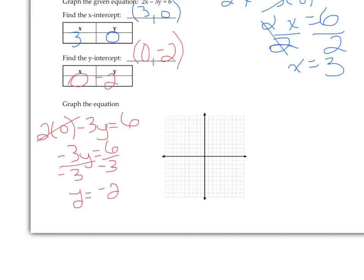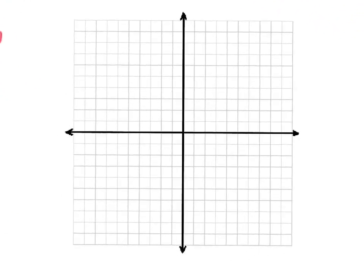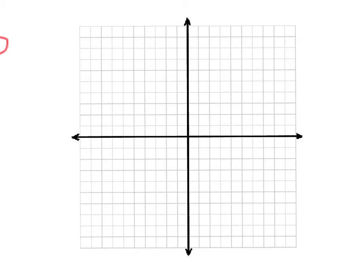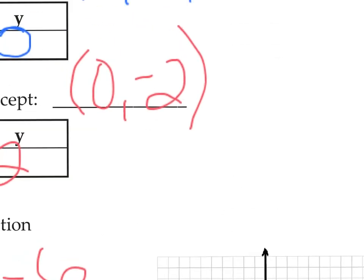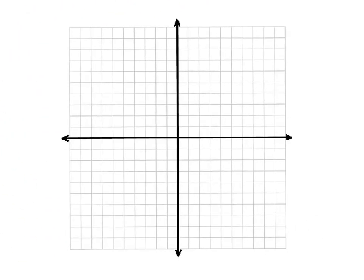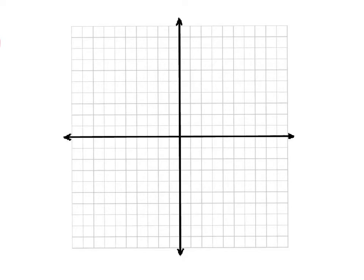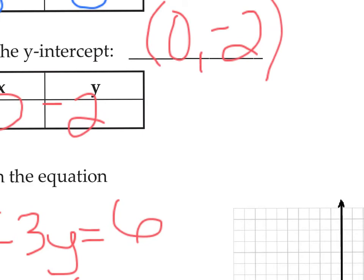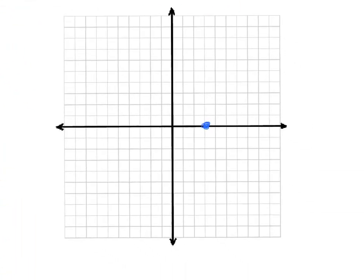We'll enlarge the graph a bit. The x-intercept was (3, 0), so we put a point at 3, 0 — right here. The y-intercept was (0, −2), so we put that here. Those are the intercepts for this equation. We connect the dots, and don't forget your arrows. That's how you graph a line by finding the intercepts.